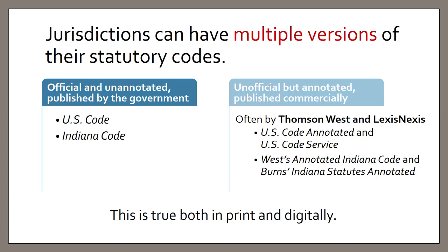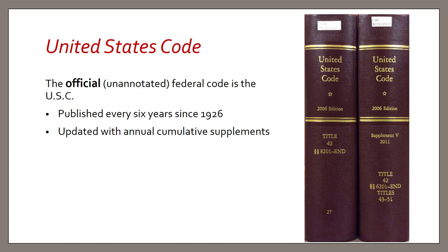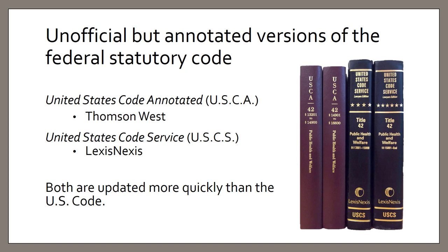Jurisdictions can have multiple versions of their unofficial codes. The U.S. Code is the official version of the federal code. It contains all federal statutes currently in effect that are of a general and permanent nature. It was first published in 1926, and a new edition comes out supposedly every six years, though that sometimes runs behind. Annual cumulative supplements are published in between those editions to keep it up to date. The two unofficial but annotated versions of the federal code are the United States Code Annotated and the United States Code Service — one from Thomson West and the other from LexisNexis — and both are updated more quickly than the U.S. Code.